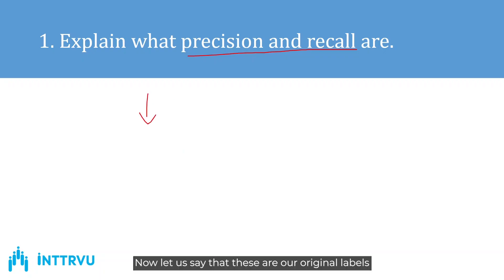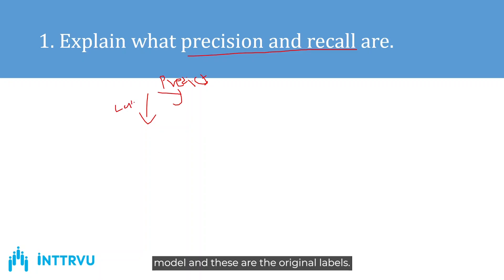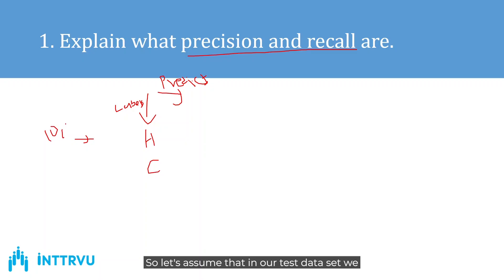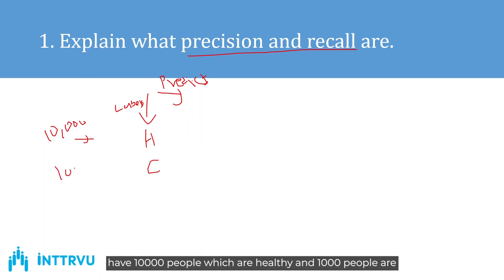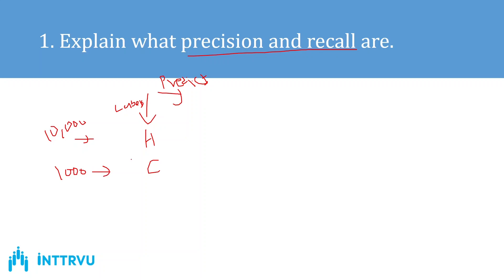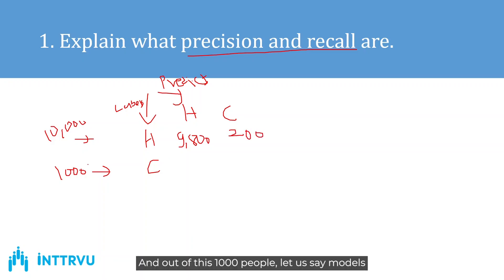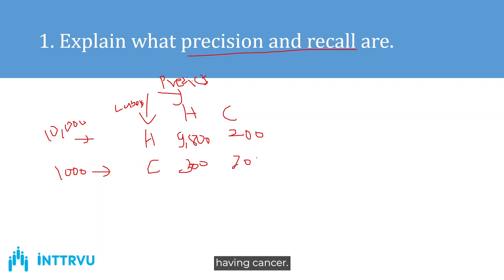Let's say these are our original labels and these are the predicted labels by the machine learning model — healthy people and people with cancer. Assume that in our test dataset we have 10,000 healthy people and 1,000 people with cancer. Out of the 10,000 healthy people, the model predicted 9,800 as healthy and 200 as having cancer. Out of the 1,000 people with cancer, the model predicted 300 as healthy and 700 as having cancer.